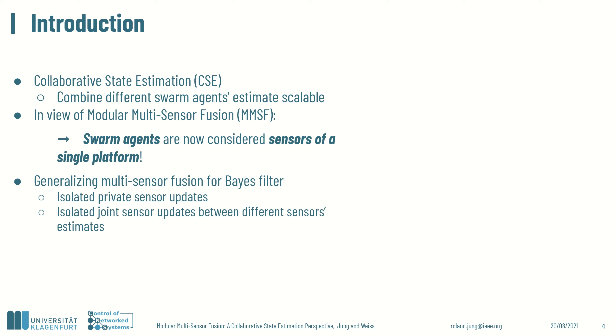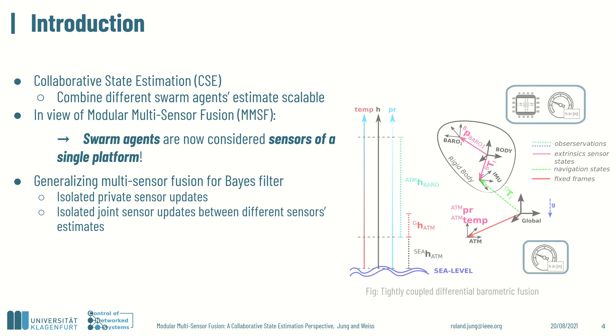We aim at generalizing multi-sensor fusion for recursive filter formulation originating from that perspective. This generalization introduces isolated private sensor updates, which can be for instance zero velocity updates for a propagation sensor or, as shown here in purple, an update on a reference sensor. And it introduces joint isolated updates between two or multiple sensors estimates. For instance, a tightly coupled barometric fusion incorporating a local reference sensor, a rigidly attached barometer and an IMU.